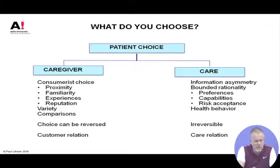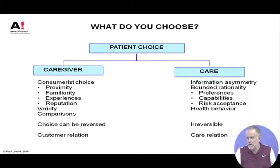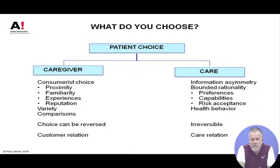The first is the choice of caregiver — where do you go, which doctor do you see, which hospital, which clinic, which GP. In emergencies this is typically restricted because you want to go to the nearest or best-suited, and that decision is many times taken by the ambulance crew. But in other situations, the choice of caregiver is largely a consumeristic choice — you choose your doctor in the same way as you choose your grocery shop or barber.